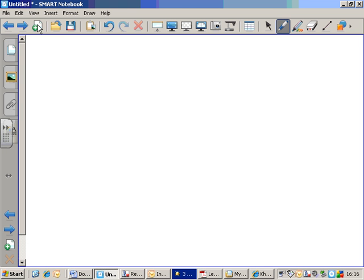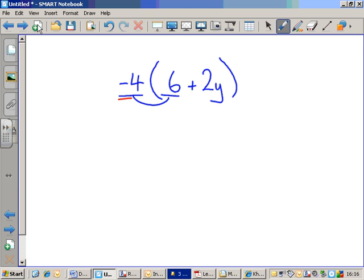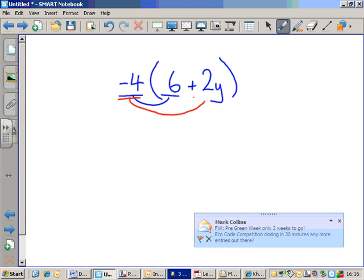Let's do another one. It's possible that your term in front of the brackets could be negative. You might have, say, minus four, open brackets, six plus two Y. There it is. So, it's minus four times that, and it's minus four times that.